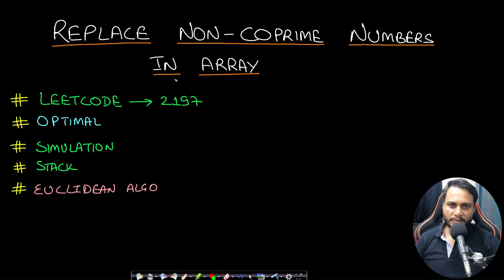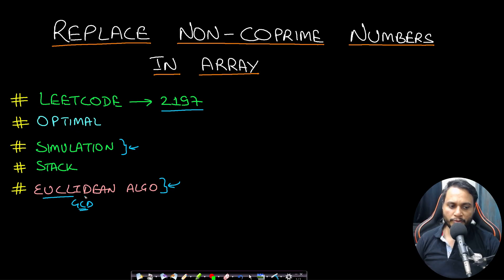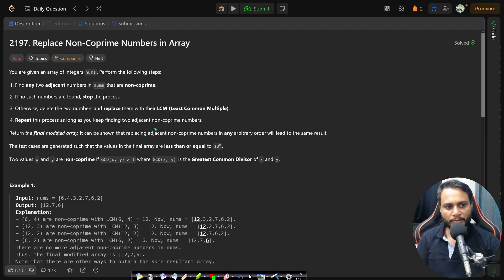Hello guys, welcome back to TakeDose. In this video we will look at 'Replace Non Co-Prime Numbers in an Array', which is LeetCode number 2197. This is based on a simulation approach. A prerequisite before solving this is to know how to find GCD of two numbers using the Euclidean algorithm. I have already made a video on this — if you are a beginner, I recommend you watch my video on the Euclidean algorithm; the link will be in the description below.